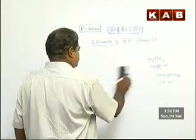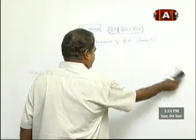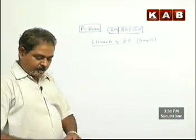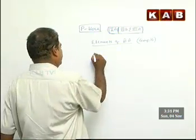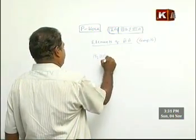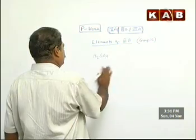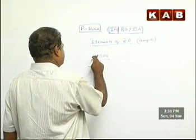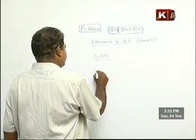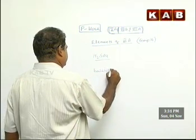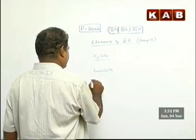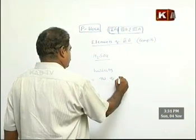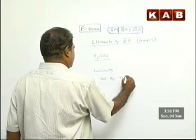That is all about oxidation states. Now, how do you draw the structure of H2SO4? Basicity is equal to the number of replaceable hydrogens.